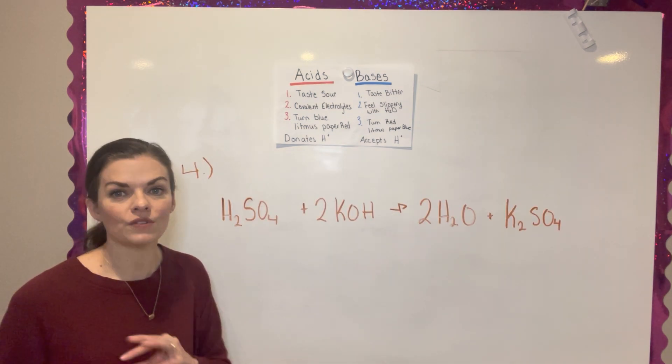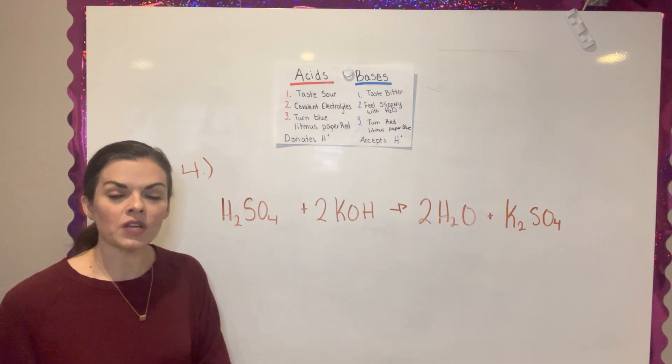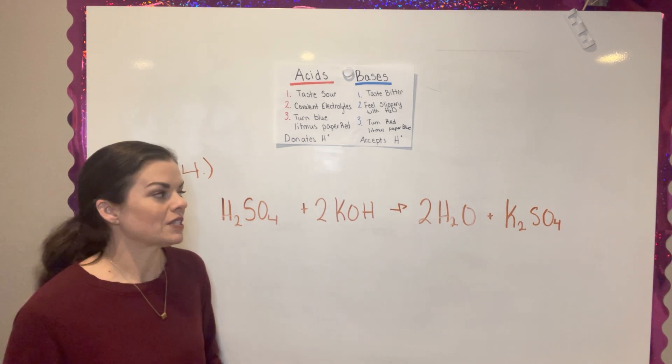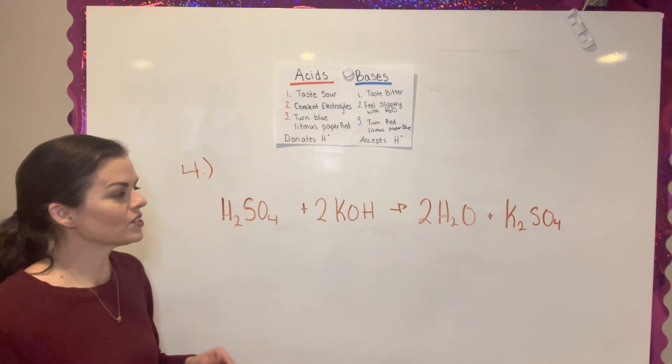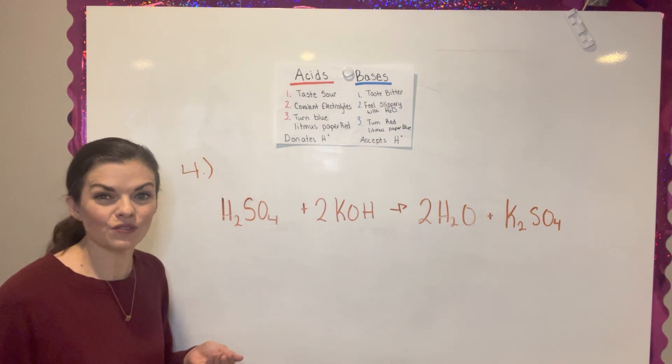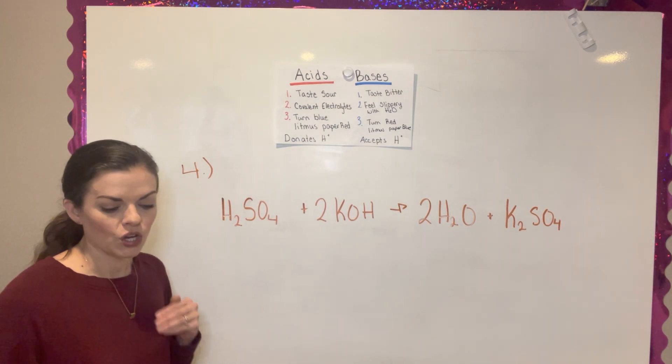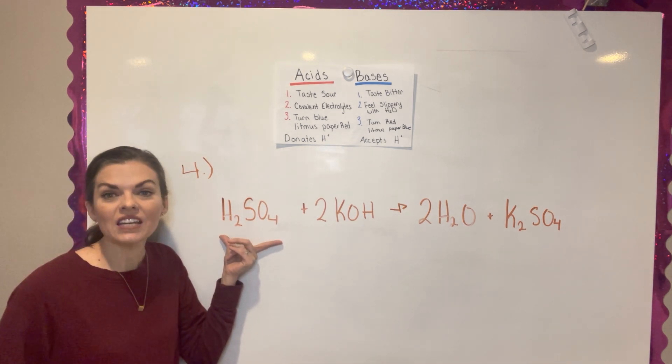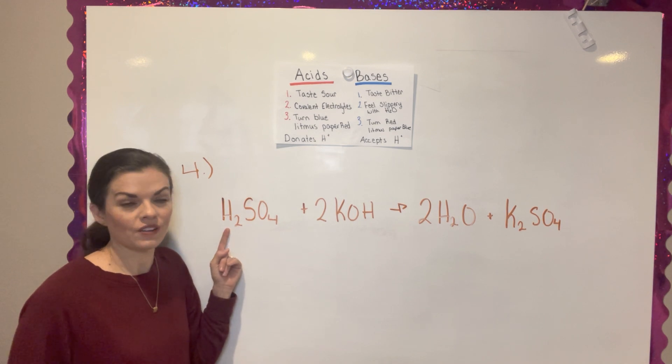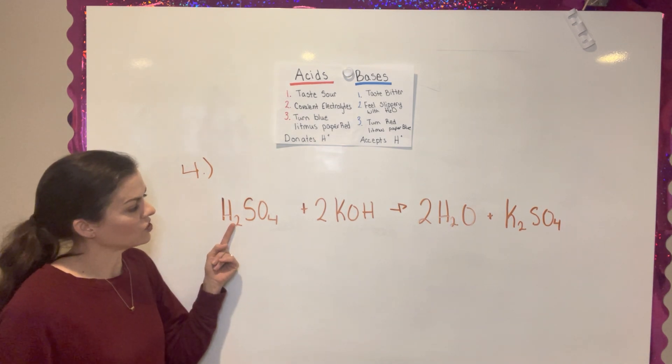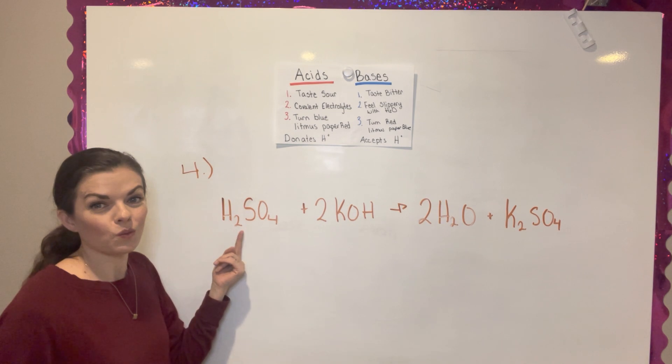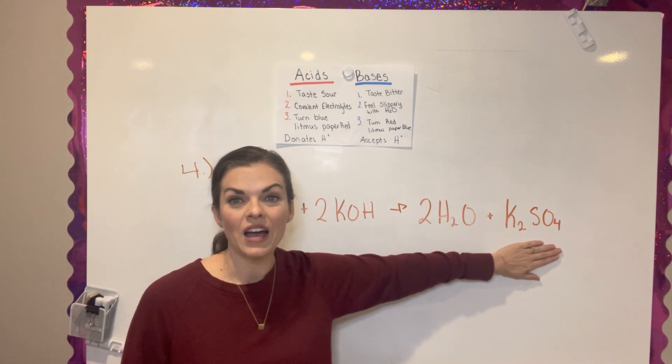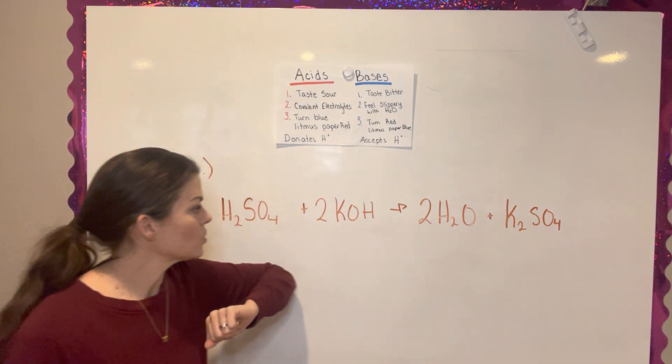Question number four, we're doing something very similar to question number three. You're going to be looking at the reactants and trying to decide which one is an acid and which one is a base. If I just start looking at this, it looks a little confusing at first. It's not as directly forward. But if I look at this compound, it has in the beginning of it an H in the front of it. What actually ends up happening is this sulfate gives away its Hs. It later ends up being bonded with this K2SO4.